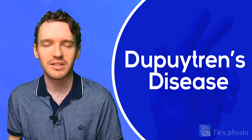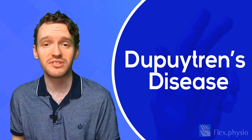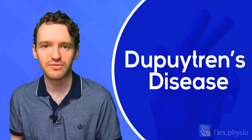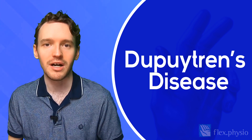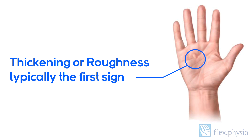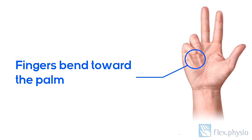Dupuytren's disease almost always develops insidiously — an otherwise normal hand will start to show signs of the disease for no obvious reason. Occasionally, it may develop after hand trauma. Some thickening or roughness of the skin is usually the first thing noticed; it may be mistaken for a callus. Over time, the thickening gradually increases, sometimes forming long cords, sometimes raised nodules, and sometimes deep pitting in the skin of the palm. There are exceptions, but the process is usually completely pain-free.